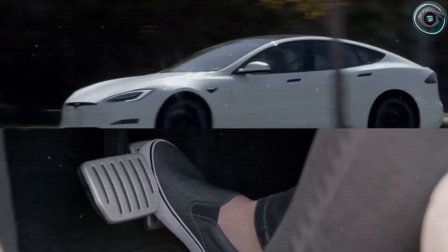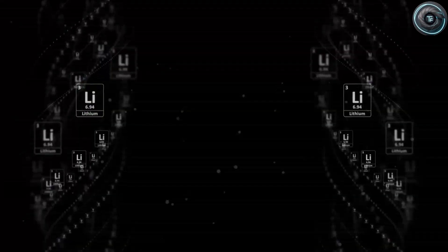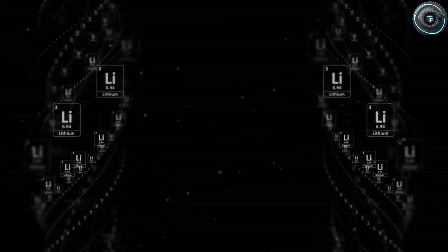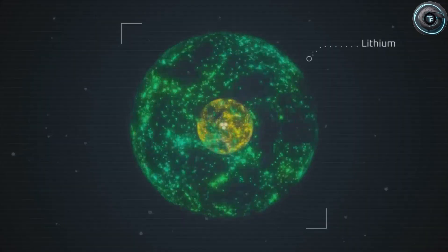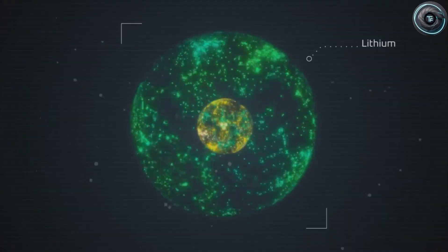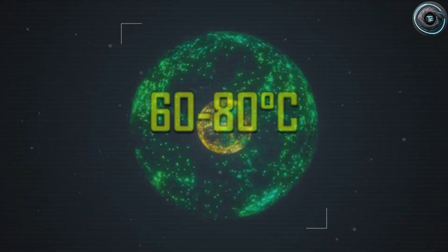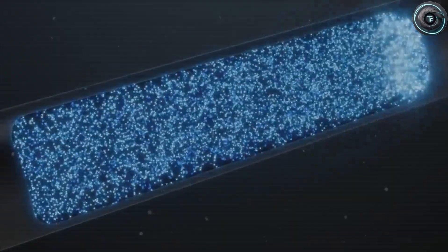That means instead of ions bumping and colliding and wasting energy, they can literally pass through energy barriers instantly—like slipping through walls rather than climbing them. The result: aluminum ions travel nearly 10 times faster than lithium, moving around 500 micrometers per second. That's an unimaginably fast flow of charge. It allows the battery to discharge almost instantly when the driver demands power.